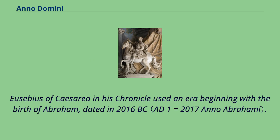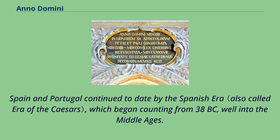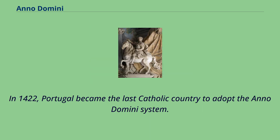Eusebius of Caesarea in his chronicle used an era beginning with the birth of Abraham, dated in 2016 BC. Spain and Portugal continued to date by the Spanish era, which began counting from 38 BC, well into the Middle Ages. In 1422, Portugal became the last Catholic country to adopt the Anno Domini system.